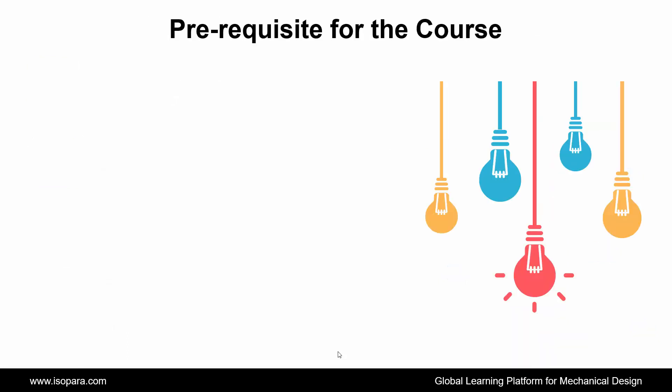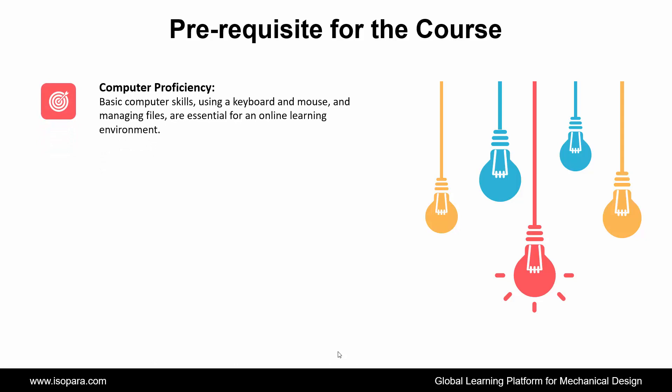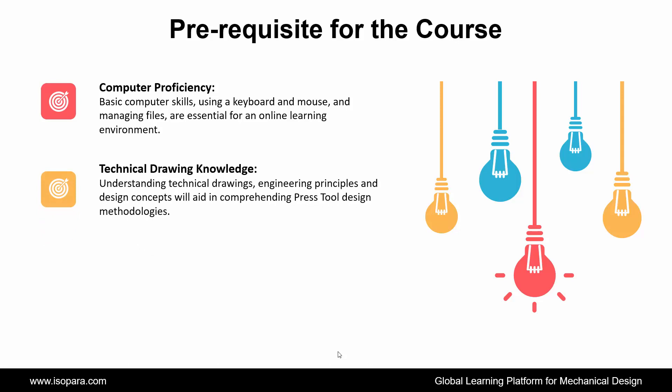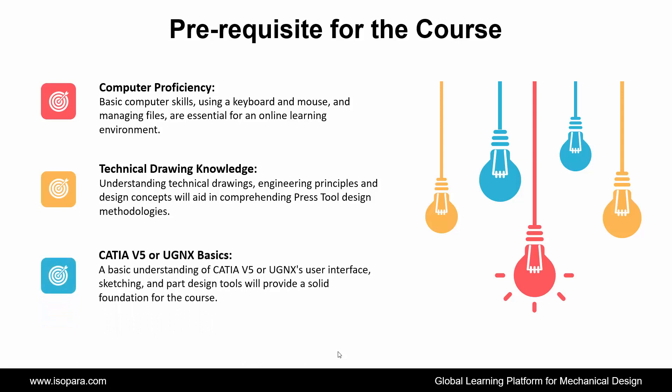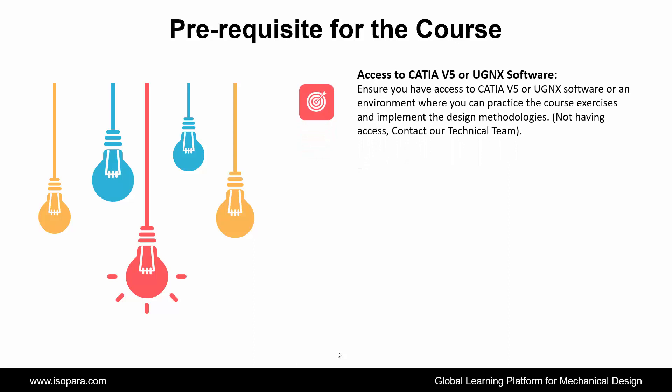Now we see what the prerequisites required for this course are. First is Computer proficiency — basic computer skills, using a keyboard and mouse, and managing files, are essential for an online learning environment. Second is Technical drawing knowledge — understanding technical drawings, engineering principles, and design concepts will aid in comprehending press tool design methodologies. Third is CATIA or UGNX basics — a basic understanding of CATIA or UGNX user interface, sketching, and part design tools will provide a solid foundation for the course. Fourth is Access to CATIA or UGNX software — ensure you have access to CATIA or UGNX software or an environment where you can practice the course exercises and implement the design methodologies. If you do not have access, contact our technical team.